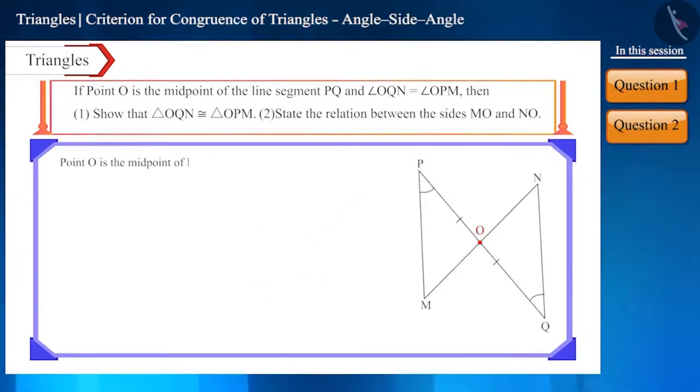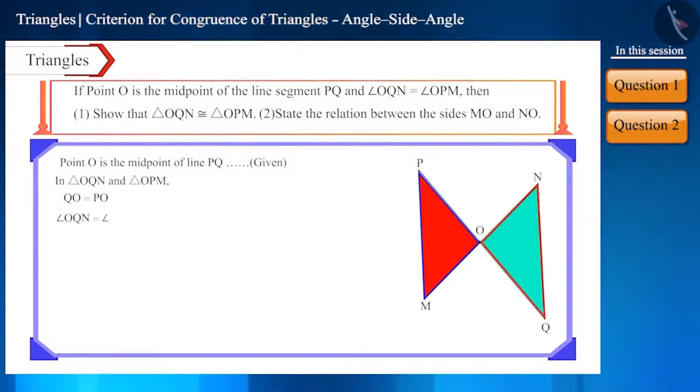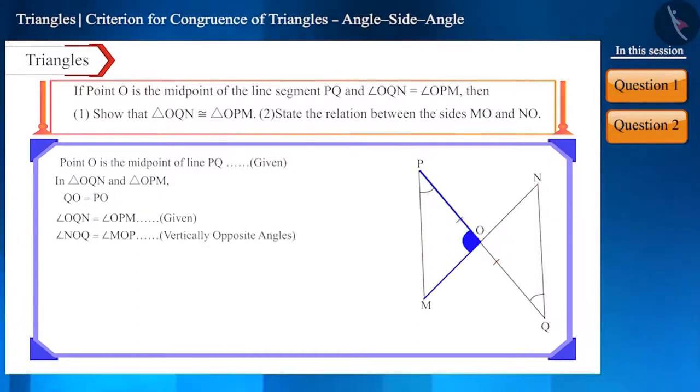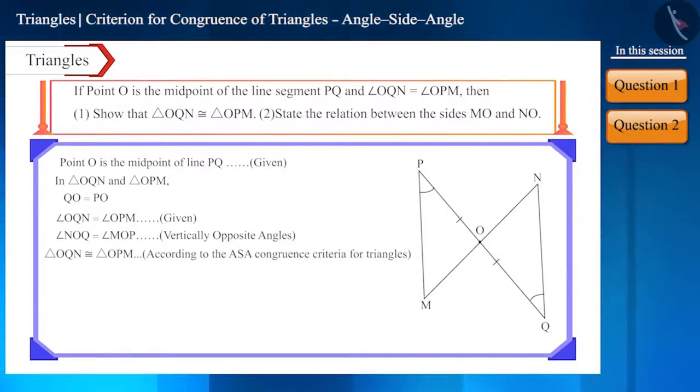Here we are given that point O is the midpoint of line PQ. Therefore QO will be equal to PO. Now look at triangle OQN and triangle OPM. We are given that these two angles are equal. Look at the figure carefully. The two angles are vertically opposite angles. That is, angle NOQ and angle MOP will be equal. In these two triangles, two angles and their included side are equal. Therefore these two triangles are congruent as per the ASA congruence rule for triangles.